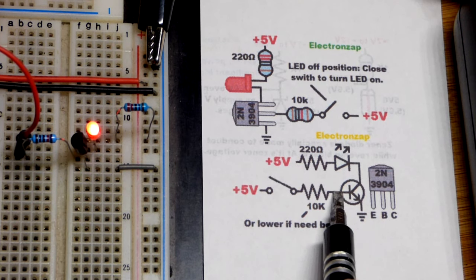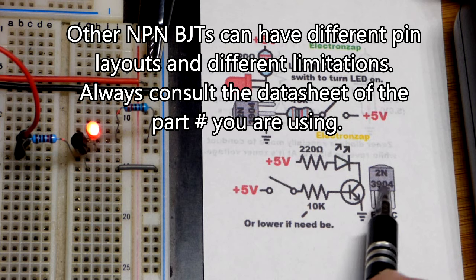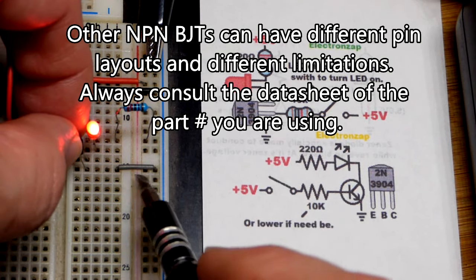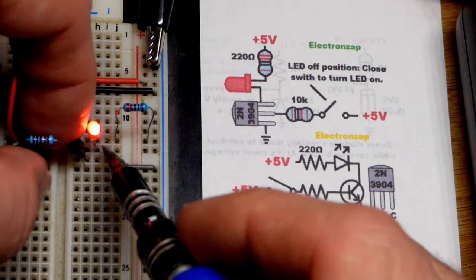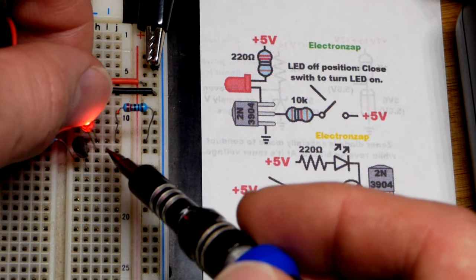If it's open then there's no current flow base to emitter. We're using the 2N3904. If you're looking at the flat side which is to the right over here, then the left pin is the emitter down at the bottom. Middle pin is the base, middle. There you can see the resistor. And top pin is the collector as I said before which is to the right if you're looking at the flat side.